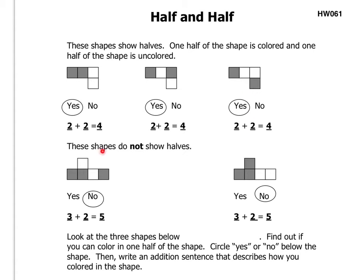These shapes below here do not show halves. Well, we have five blocks. Three of them are shaded, two are not. Three plus two equals five. That is not cut in half.